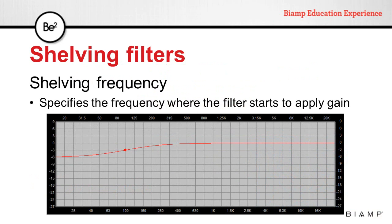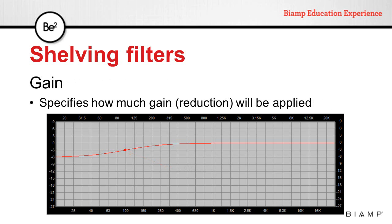These type of filters can offer control over the shelving frequency — this is the frequency from which the filter will apply gain — and gain, which specifies how much level is going to be added or subtracted from the signal.